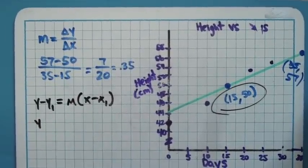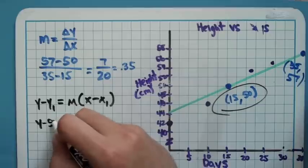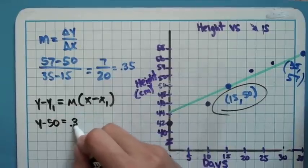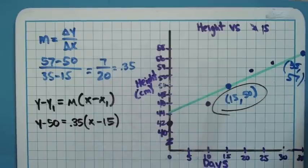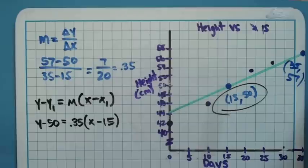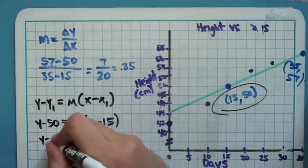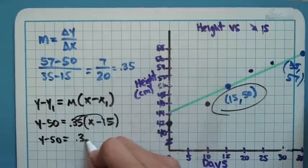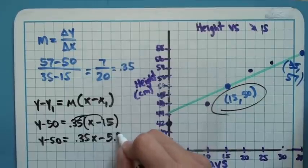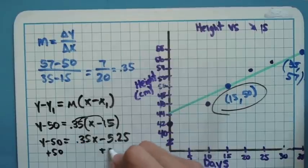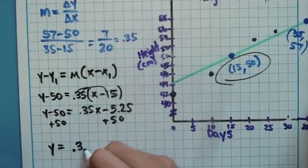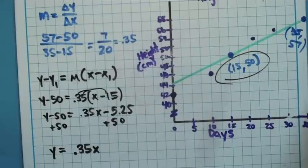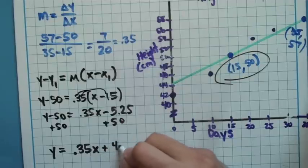So we get y minus 50 equals 0.35 and we get x minus 15. And then it's really just a matter of getting y by itself just like we would normally do. The only thing is the numbers are a little uglier in this problem. So I get y minus 50 equals 0.35x minus 5.25. We're going to add our 50 onto both sides. So my final equation right here is going to be y equals 0.35x plus 44.75.